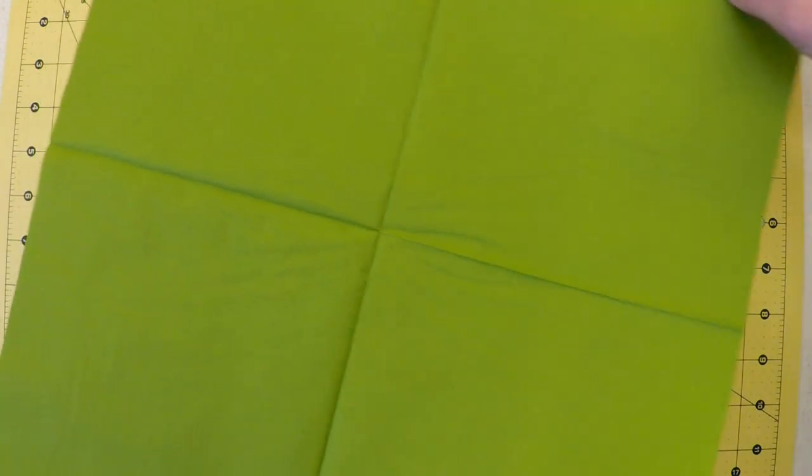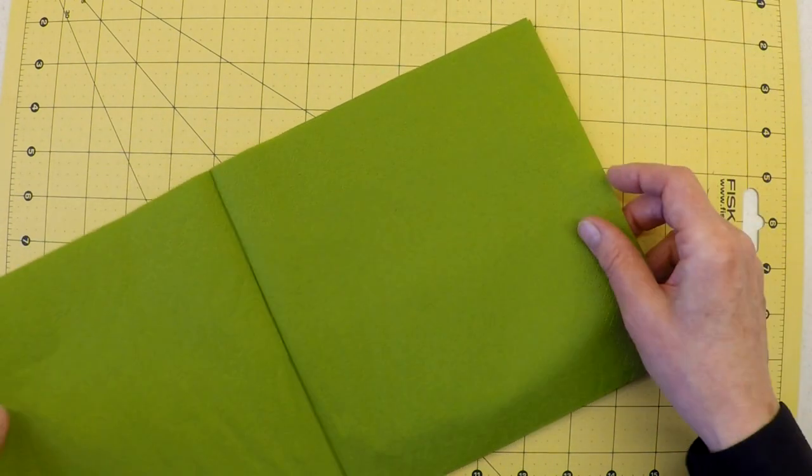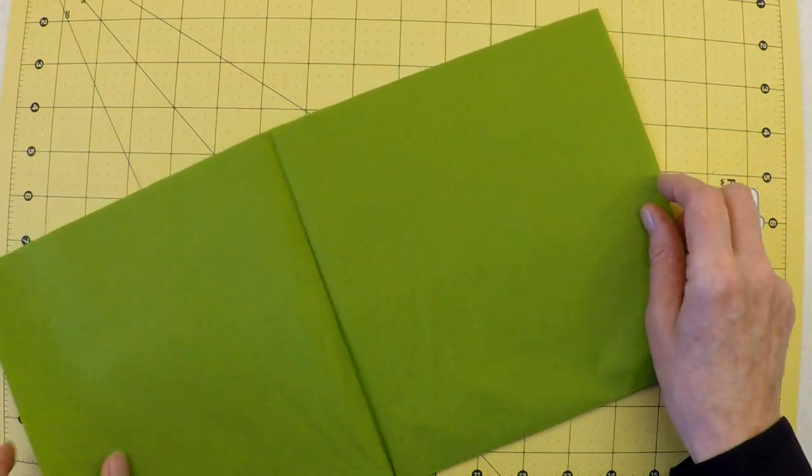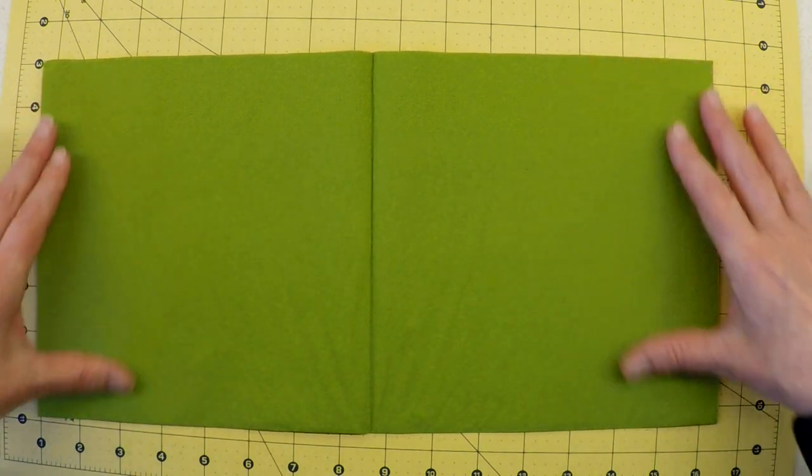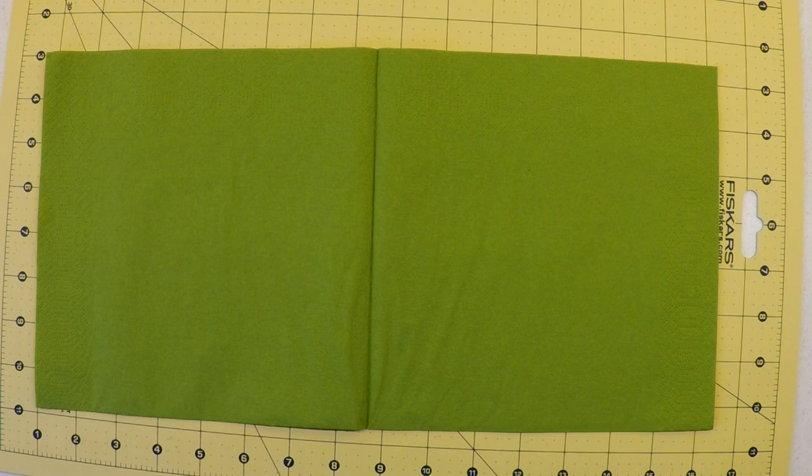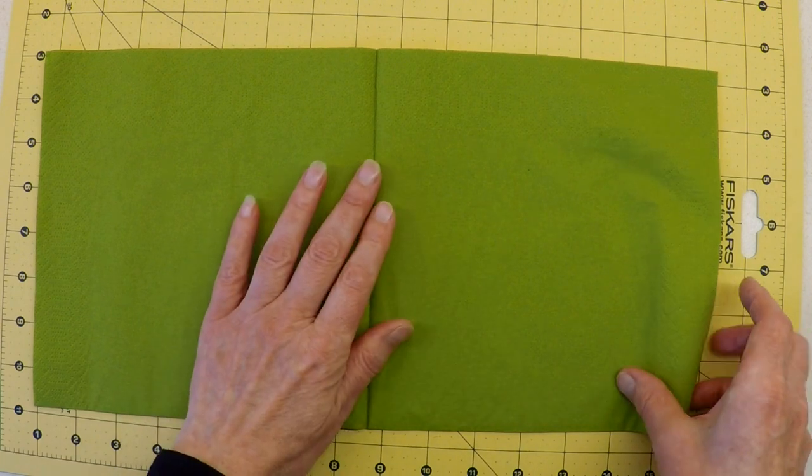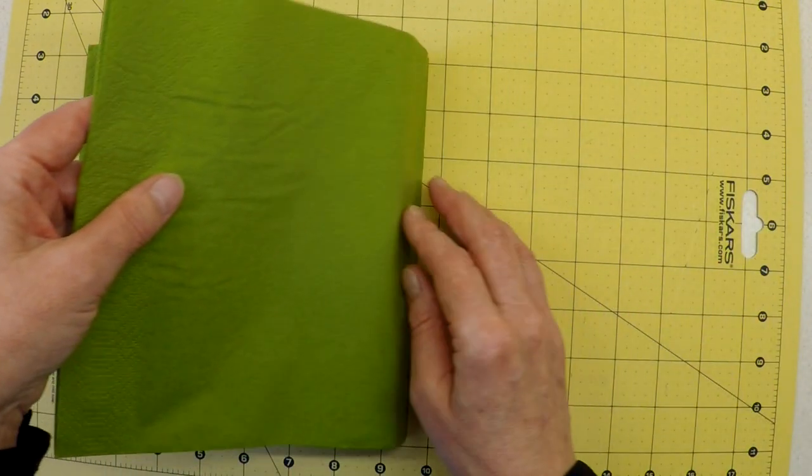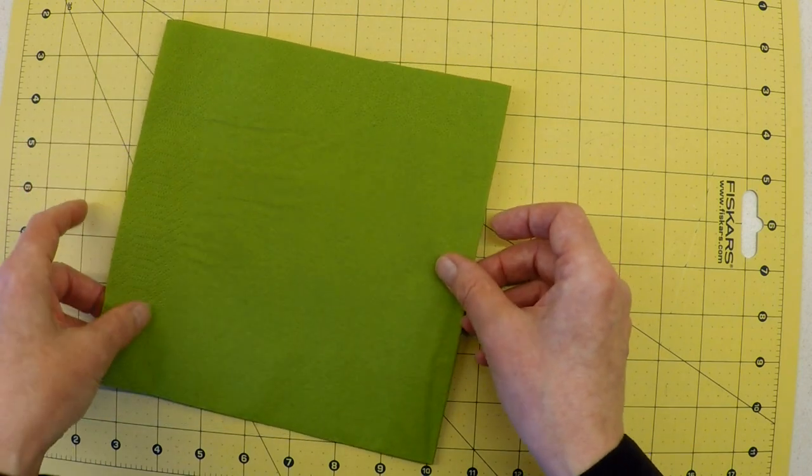The first thing that we do is we simply fold that in half. This one is already creased so it goes into place very nicely, corners and sides meeting. Then, as I'm sure you've guessed, you're folding that into half again so that the material is now into a quarter section.